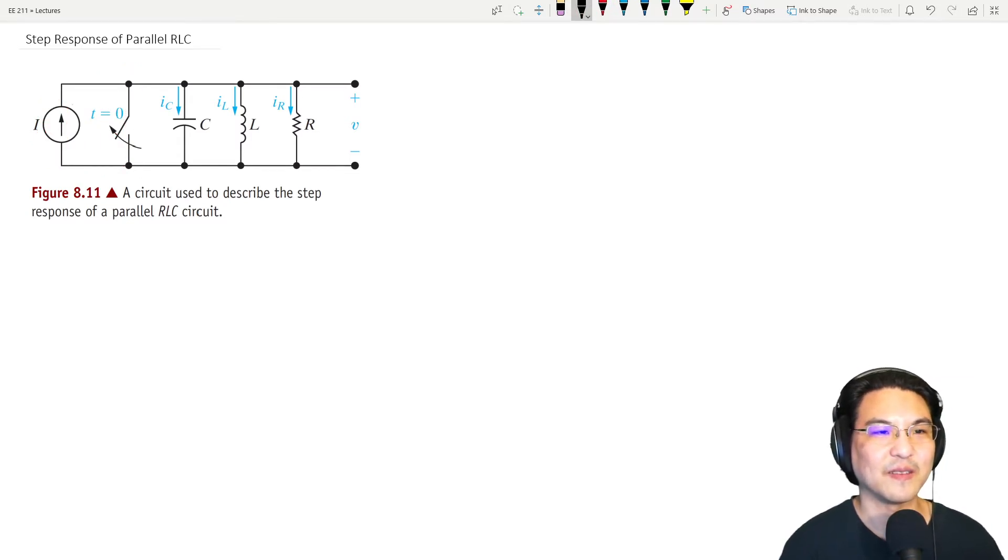So that's when this current source has been connected for a long time, and then we suddenly short it out, disconnecting it. So then what happens is, this is gone, so you just do KCL of these three circuit elements. So this is for the natural response.